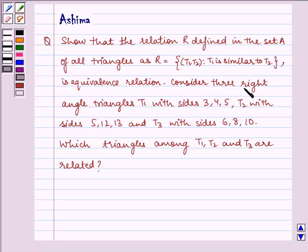Consider three right angle triangles: T1 with sides 3, 4, 5; T2 with sides 5, 12, 13; and T3 with sides 6, 8, 10. Which triangles among T1, T2, and T3 are related?